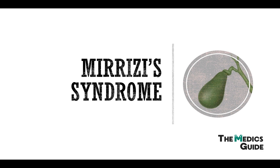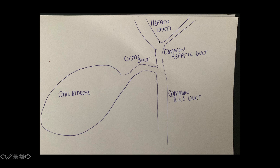Let's look at a picture of the biliary tree to try and understand it a little better. Over here you can see the hepatic ducts and the common hepatic duct, which joins with the cystic duct to form the common bile duct, and of course the gallbladder over here.